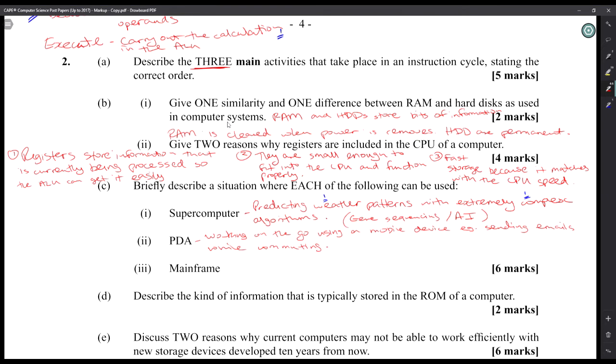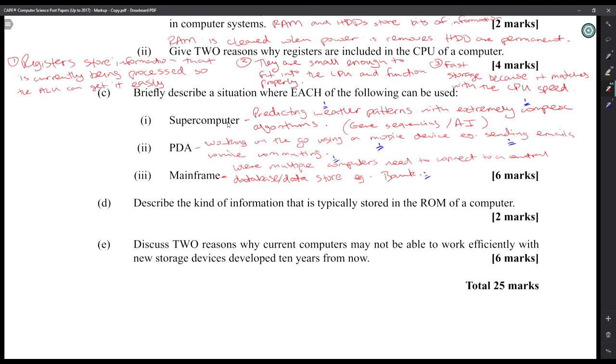And there's a PDA. A PDA is used for working on the go, using a mobile device - example: sending emails to use while commuting. These are situations, just applications of the types of computers. Mainframes are definitely for like banks and large financial institutions that have to store large amounts of data and a lot of people have to access it simultaneously. So where multiple companies or multiple computers need to connect to a central database or data store - example: a bank.